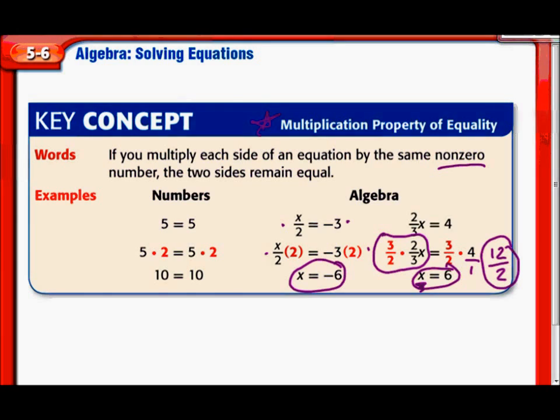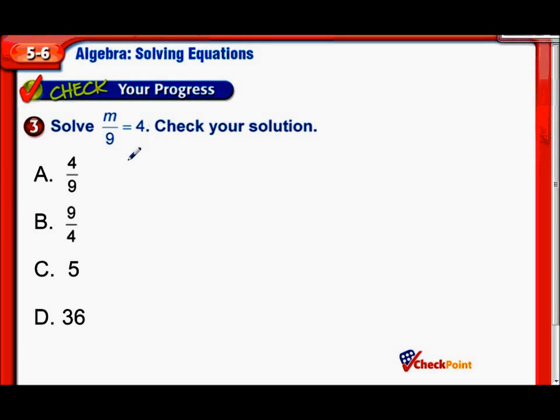Let's try another one. Solve m divided by 9, or you could just say m over 9 equals 4. We have our variable and they're dividing it by 9. The opposite of dividing by 9 would be multiplying by 9.